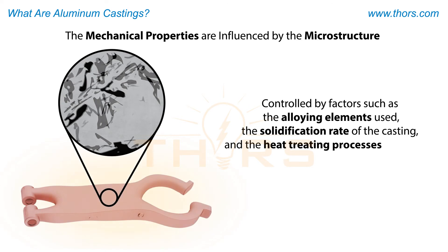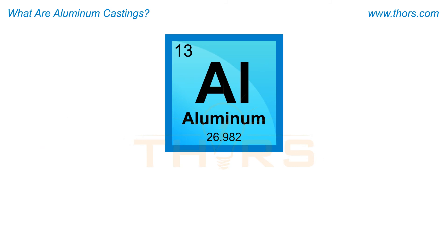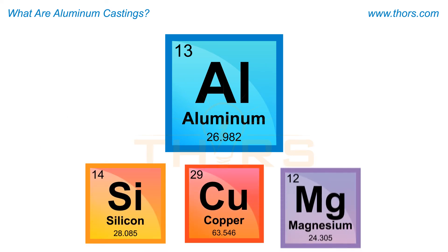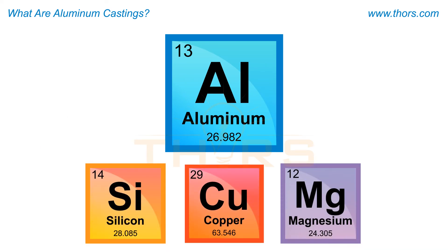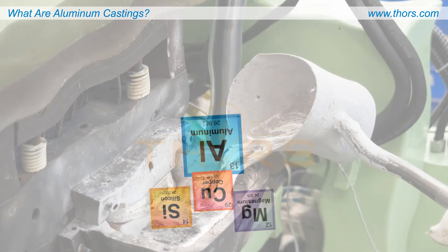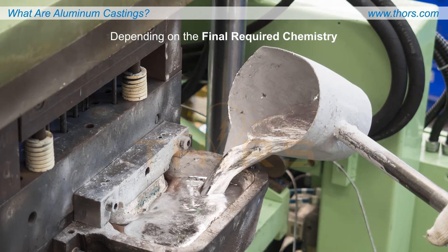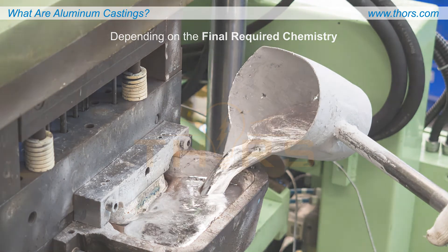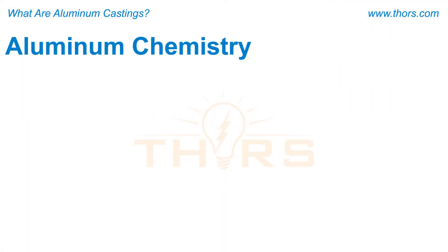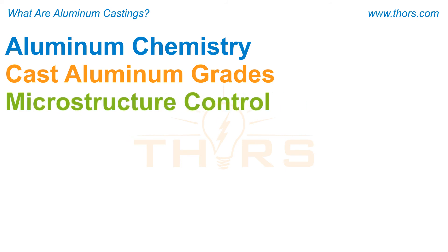In addition to aluminum, silicon, copper, and magnesium are examples of elements that are commonly added to aluminum alloys, depending on the final required chemistry of the castings.